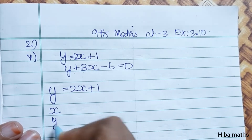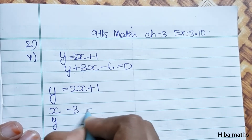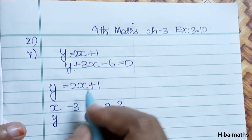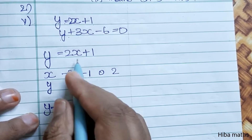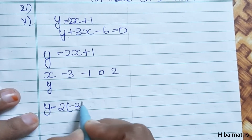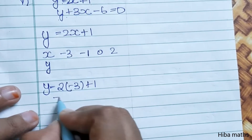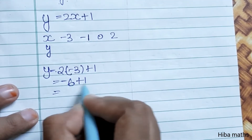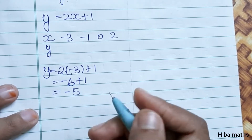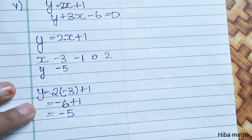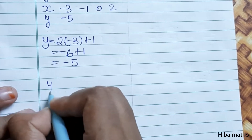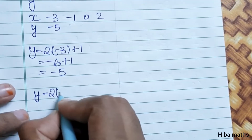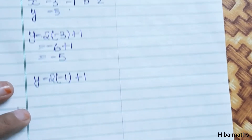For Line 1, let's take x values: minus 3 and minus 1, giving us points. When x is minus 3: y is equal to 2 into minus 3 plus 1, that is minus 6 plus 1, so y is equal to minus 5. Point: (minus 3, minus 5). When x is minus 1: y is equal to 2 into minus 1 plus 1, that is minus 2 plus 1, so y is equal to minus 1.